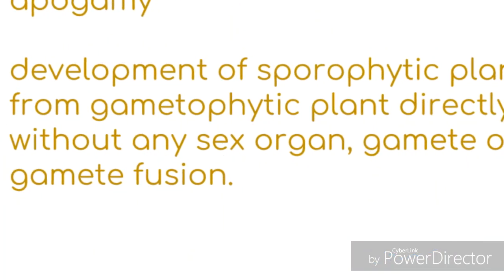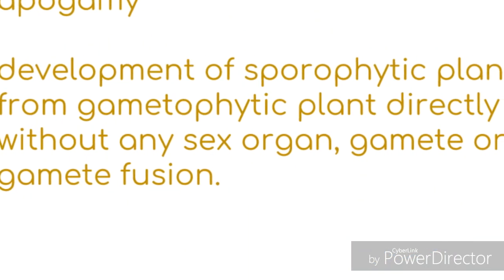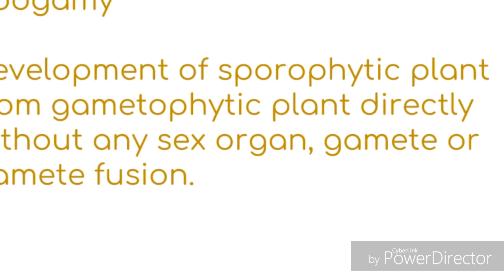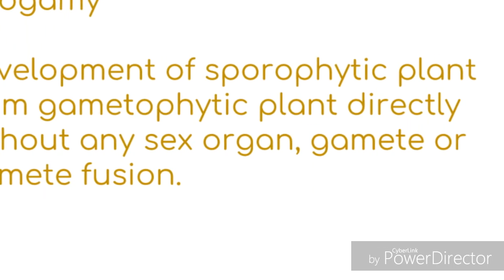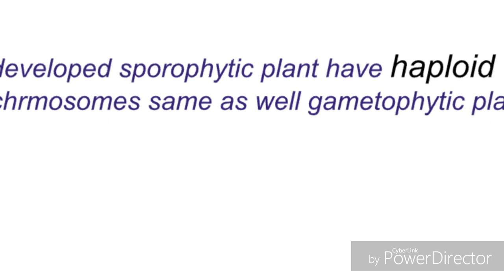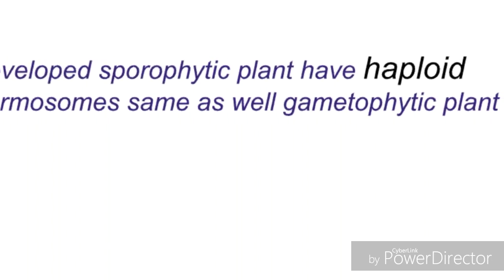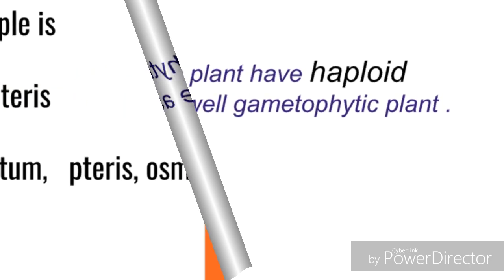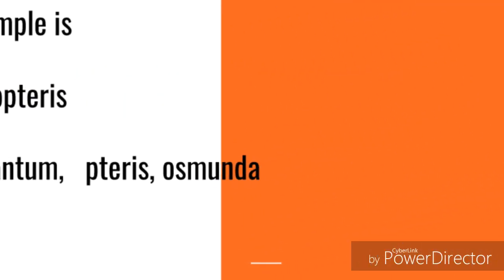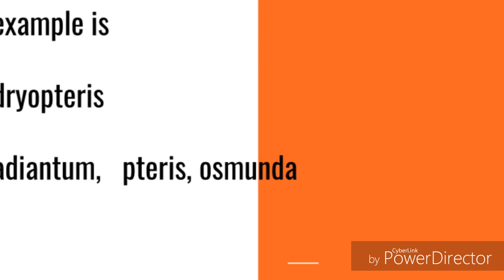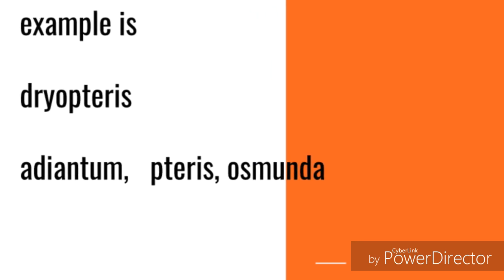The first word is apogamy. This means development of the sporophyte from the gametophyte without any sex organ, any gamete, or sexual reproduction — the sporophytic plant will be developed from the gametophytic plant. It is naturally found in ferns such as Adiantum and Osmunda.